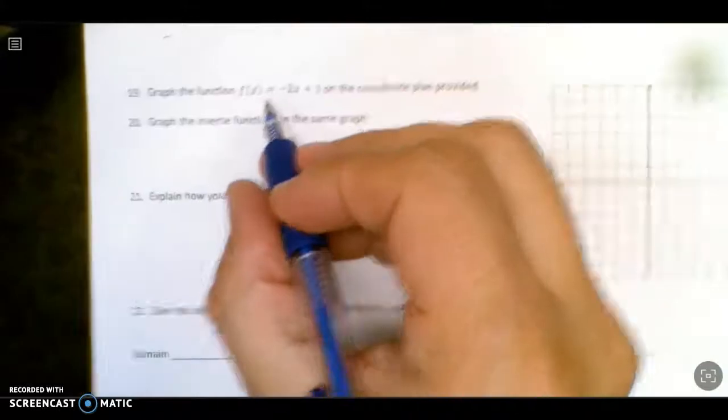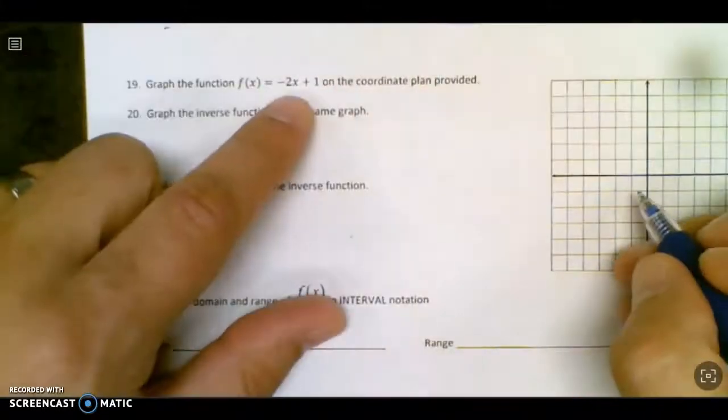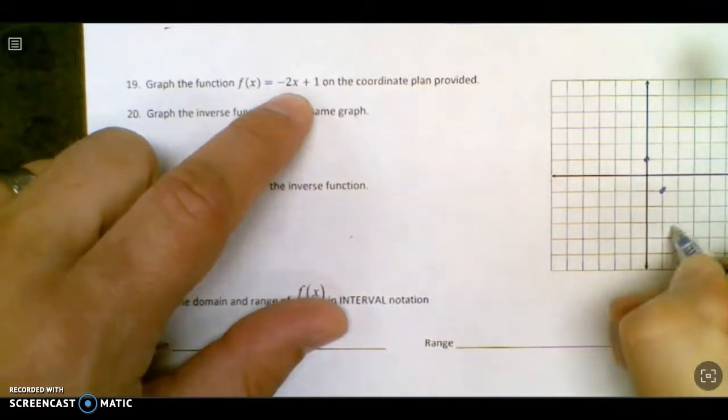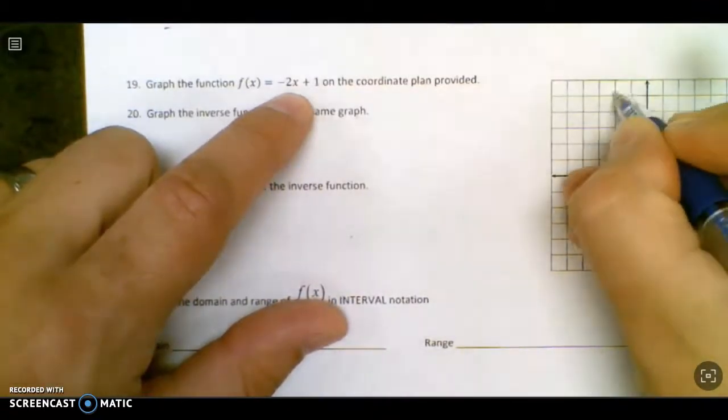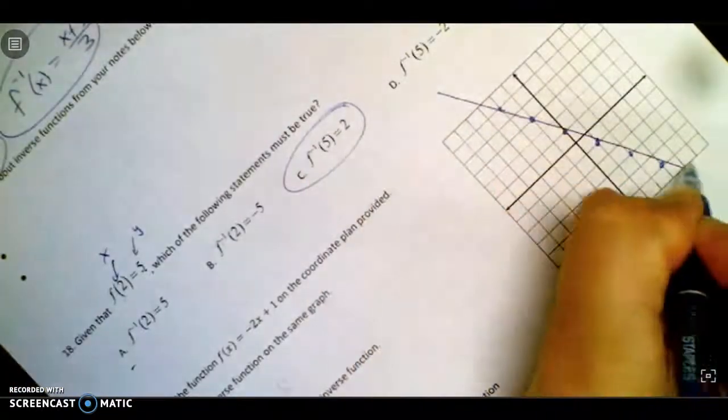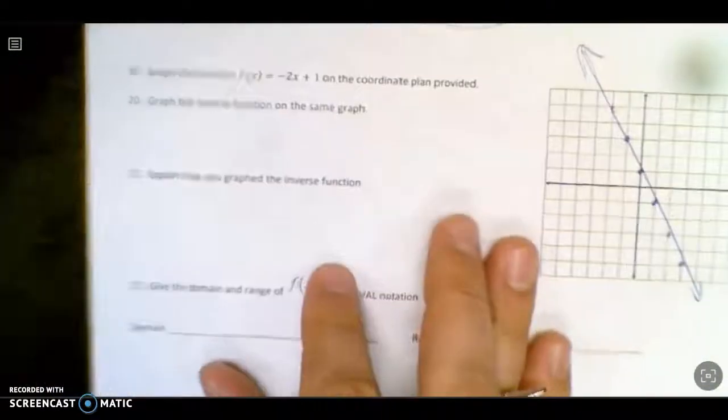And then, this says graph the function negative 2x plus 1. So I can do that. Here's plus 1, down 2, right 1. So we've got this going on, or up 2 left 1. So we've got this beautiful graph here.